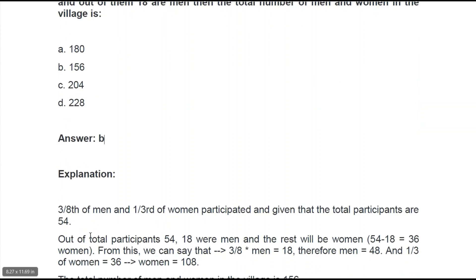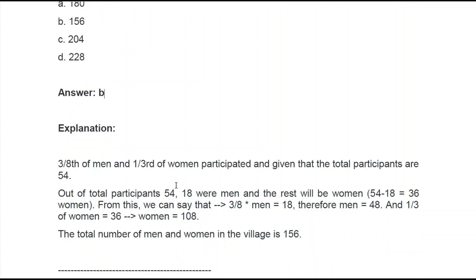The explanation: 3/8 of men and 1/3 of women participated, with total participants being 54. Out of 54, 18 are men and the rest, 36, are women. From this, 3/8 × men = 18, therefore men = 48. And 1/3 × women = 36, so women = 108. Total = 48 + 108 = 156.